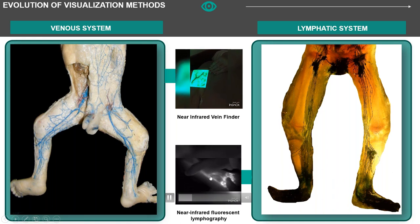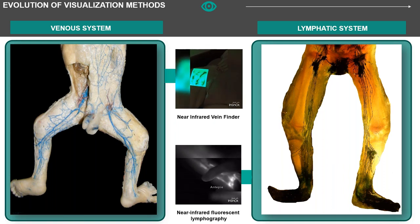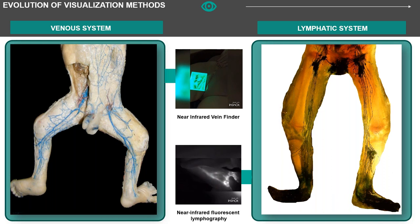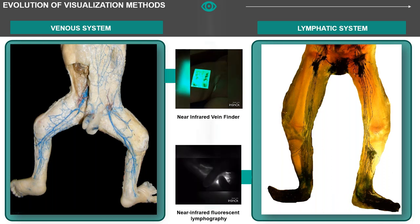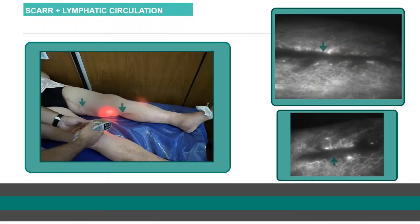All methods are complementary, and we decide which to choose depending on what we need to evaluate. It's important to remember that. The ICG lymphography is very interesting — it's in real time, without radiation, and we can perform it at the office in a few minutes. For me, it has made a revolution.